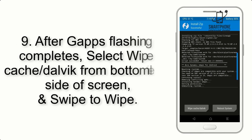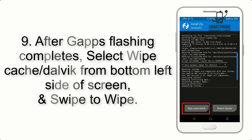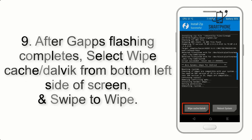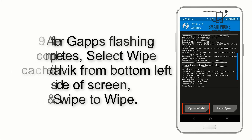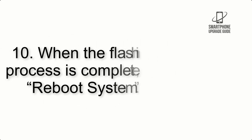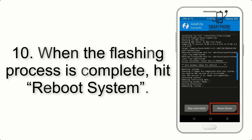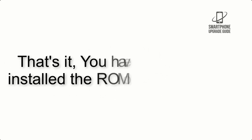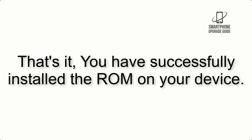Step 9: After GApps flashing completes, select Wipe Cache and Dalvik from the bottom left side of the screen and swipe to wipe. Step 10: When the flashing process is complete, hit Reboot System. That's it — you have successfully installed the ROM on your device.